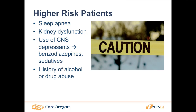Let's look at higher-risk patients for opioid use. Our highest-risk patients are anyone with sleep disturbance or sleep apnea, because that can increase their risk of respiratory depression. Patients with kidney dysfunction won't clear the drug as fast and are at higher risk of drug buildup. Use of other CNS depressants adds on more risk. And of course, if a patient has a history of drug or alcohol abuse, we want to be cautious about giving them a drug that can be abused.